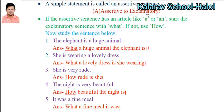Now, assertive to exclamatory — when you transform an assertive sentence to exclamatory, keep this in mind: if the assertive sentence has an article like 'a' or 'an', you start the exclamatory sentence with the word 'what.' If the article 'a' or 'an' is not there, you start the exclamatory sentence with 'how.'